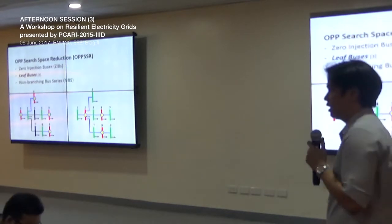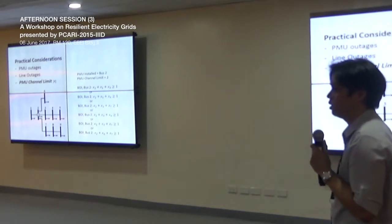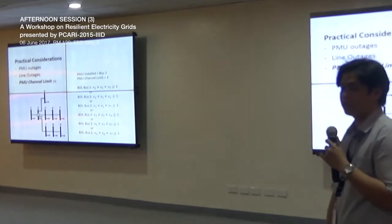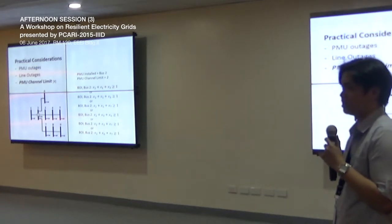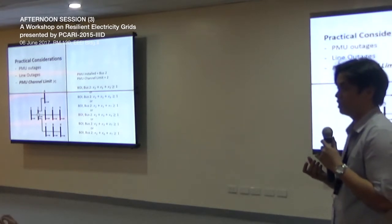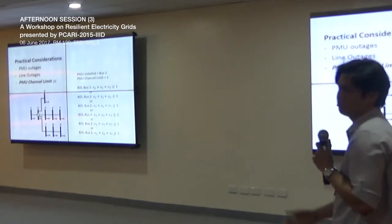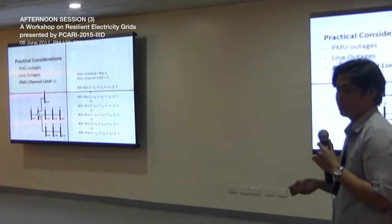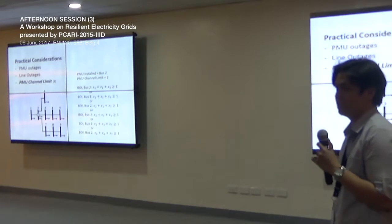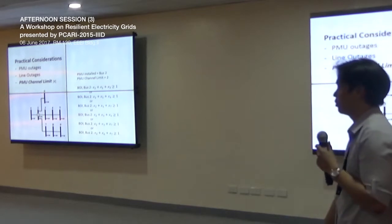Another important consideration is the PMU channel limit. Most studies assume that a PMU can monitor all incident lines, but in reality a PMU has a limited number of channels. For example, some PMUs may only monitor one or two three-phase lines at most. So a PMU channel limit consideration is also important.